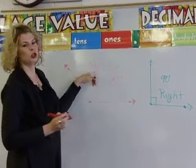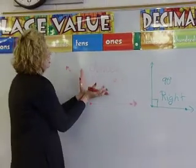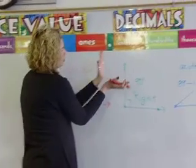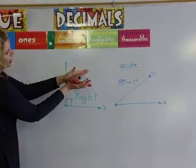I always tell the kids, it's obtuse, it's kind of obese, this angle ate too much. So it's a lot bigger. We have an obtuse angle, a right on perfect angle, and a cute little angle.